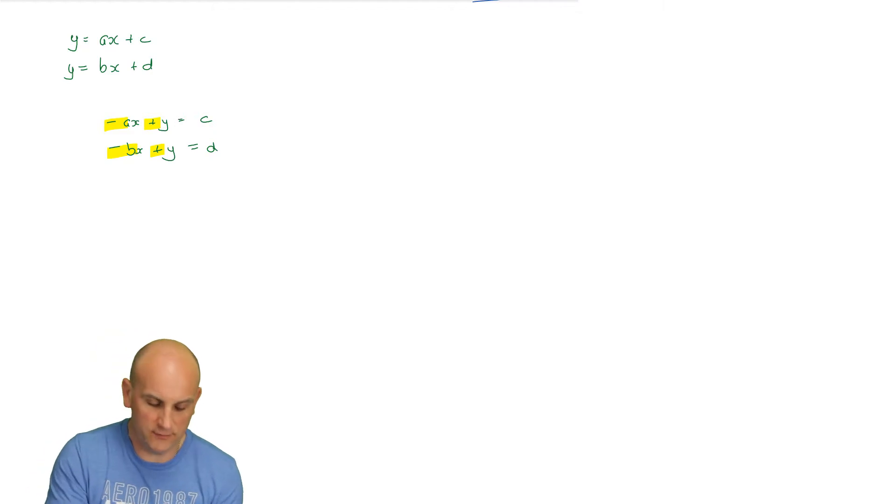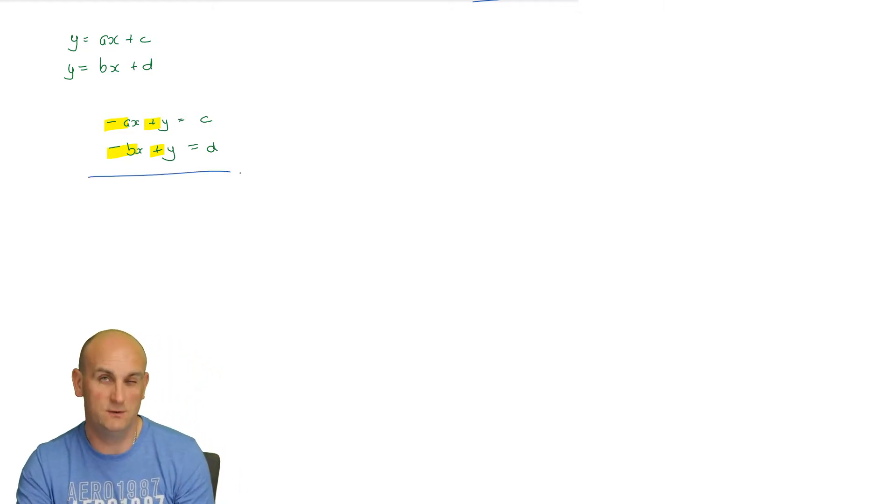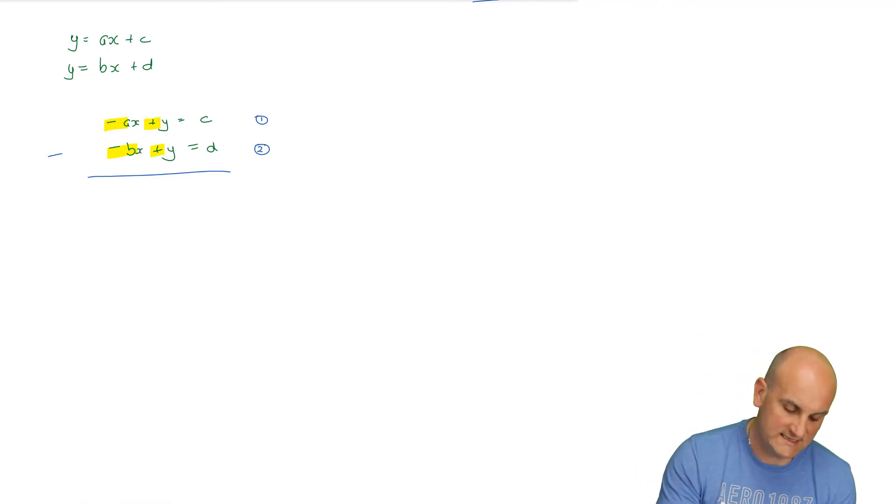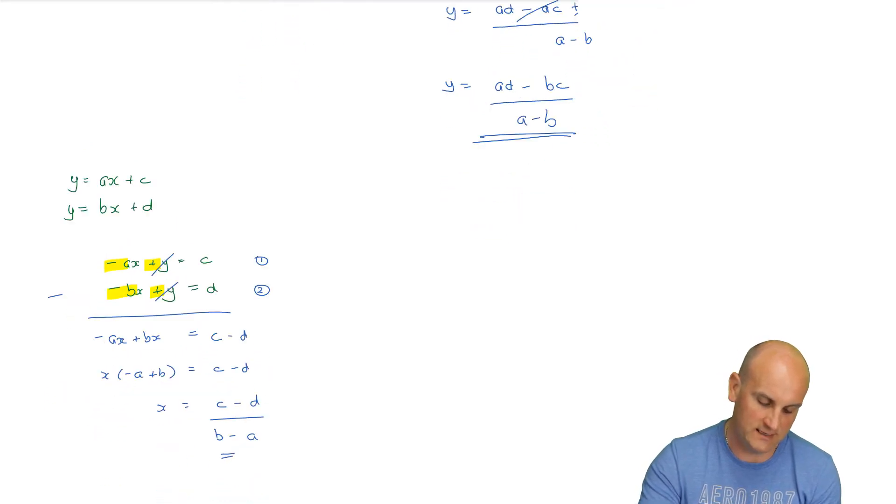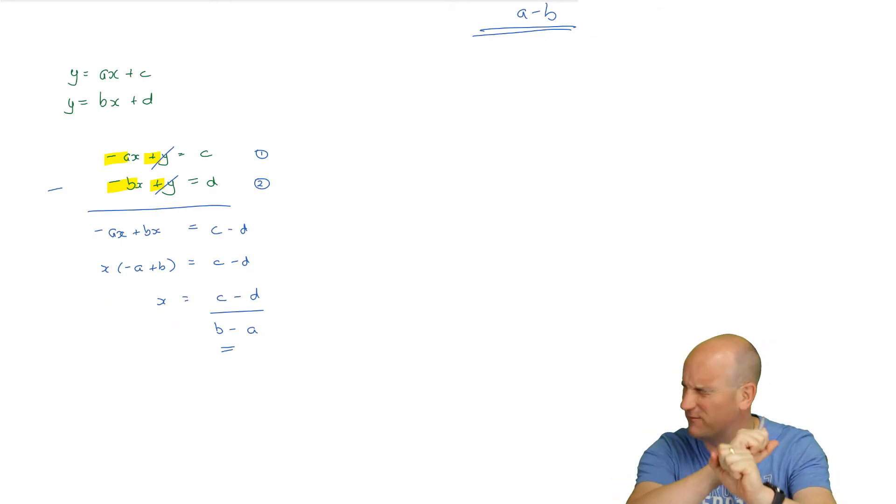When we eliminate, we're looking for coefficients in front of the x or y to be the same. Looking here, minus a minus b, are they the same? No. Let's look at the y values: positive one and positive one. That's the one I'm going to do. I'm going to look to eliminate my y values. Looking at the signs in front of those y values, they're two positives. I know to reverse it for simultaneous equations and make it a subtract. So I'm going to subtract equation number two from equation number one. That's going to give me minus ax minus minus bx, which is negative ax plus bx. My y values are going to disappear and I'll end up with c minus d. Two becomes one. That becomes x times minus a plus b equals c minus d. So x equals c minus d all on b minus a.